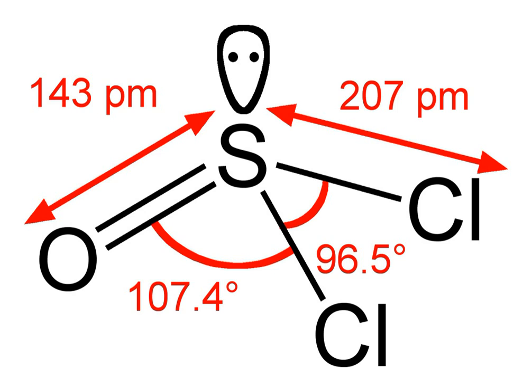SOCl2 adopts a trigonal pyramidal molecular geometry with Cs molecular symmetry. This geometry is attributed to the effects of the lone pair on the central sulfur center.